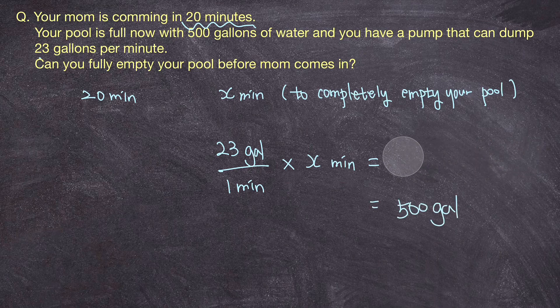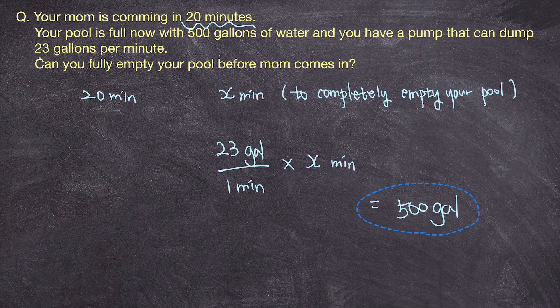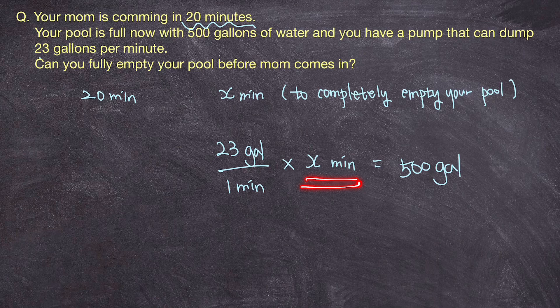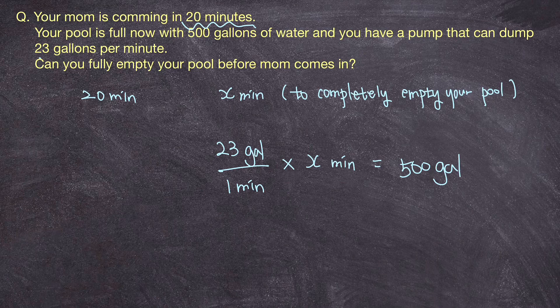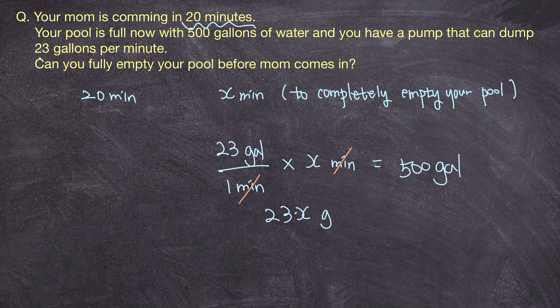So instead of writing it like that, I'm going to set it equal to 500 gallons so that I can figure out how many minutes it'll take for me to completely dump out 500 gallons of water using a pump that dumps 23 gallons per one minute. Now, in order to simplify this equation, I'm going to cancel out this unit of minute like that. And that'll give me 23 times x gallons of water is equal to 500 gallons of water.